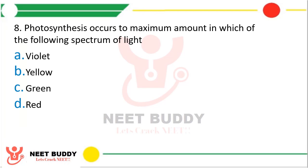Question 8. Photosynthesis occurs in maximum amount in which of the following spectrum of light? Violet, yellow, green, or red? The correct answer is option C. In the blue and the green spectrum of light, photosynthesis occurs in maximum amount.